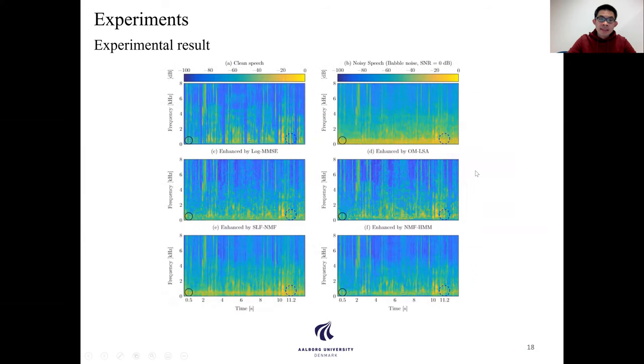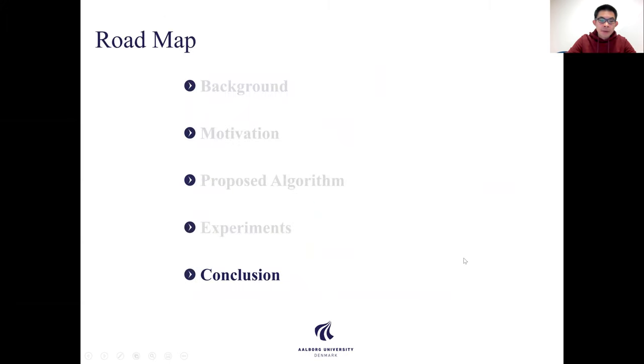And this figure shows the spectrogram comparisons. By comparing with other methods, our method can preserve better harmonic structure, which can be shown in the black area. And also, our method can remove more noise, and it is in this blue area.